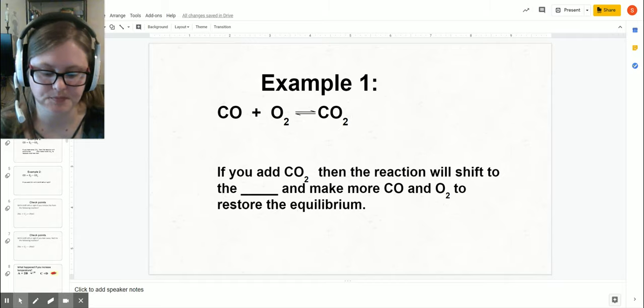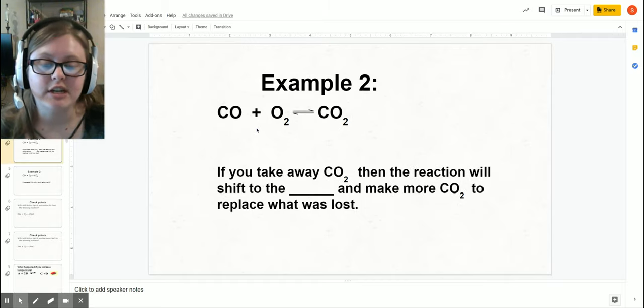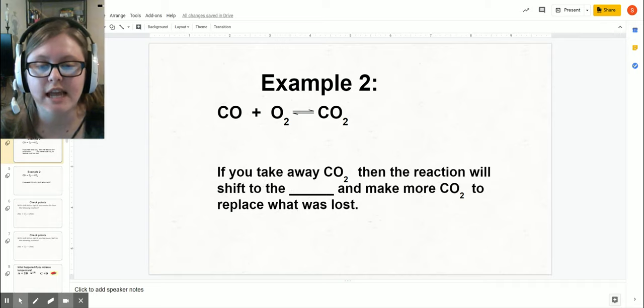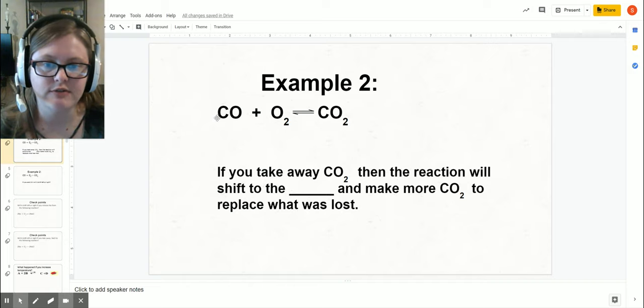Here's another example. Let's say we take the same reaction but instead we're removing CO2—we're taking it away, we're decreasing the amount. Now to be in equilibrium, it wants to add more CO2, so it wants to shift to the right.